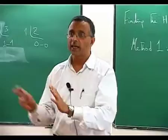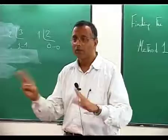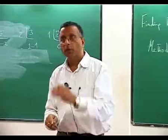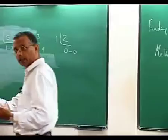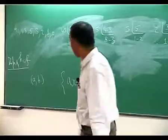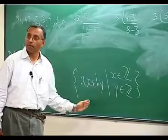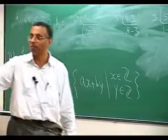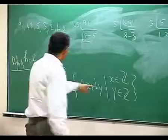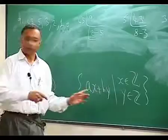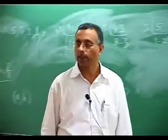Since the ring is commutative, you call something an ideal if it is a non-empty additive subgroup, and whenever you take an element of this subset and multiply it by any element of the ring, it should come into that subset. This set {Ax + By} has that property: if I add Ax + By and Ax' + By', I get A(x+x') + B(y+y'), and if I multiply by any integer M, I get AMx + BMy — so this is an ideal.